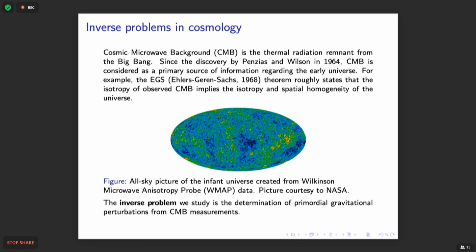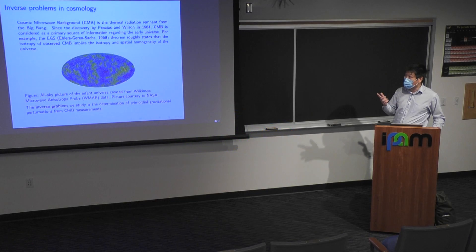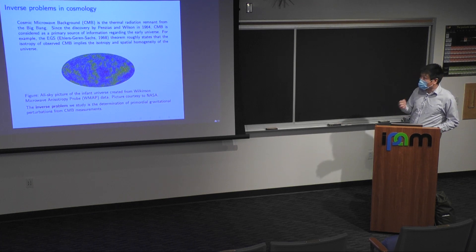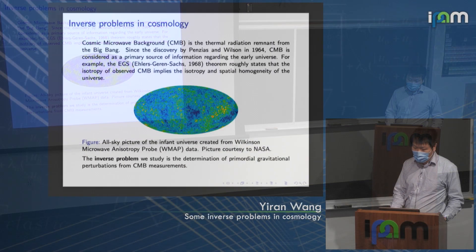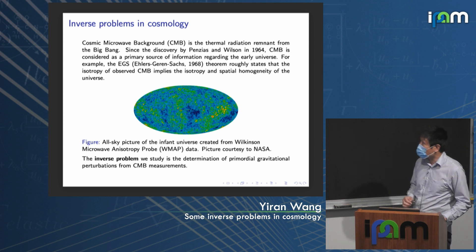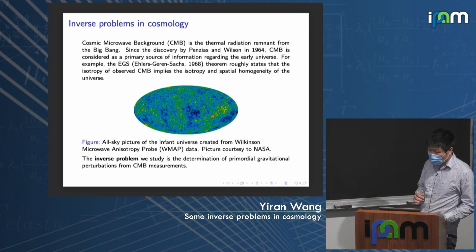It is suggested that one can possibly detect these waves indirectly by using the cosmic microwave background. About two years ago, I heard a talk by Nobel Prize winner Professor Barry Barish on gravitational wave detection, and he also mentioned the possibility of detecting these waves using the CMB. The CMB is the thermal radiation formed right after the Big Bang, discovered by Penzias and Wilson in 1964. Since its discovery, the CMB has been considered a primary source of information regarding the early universe.